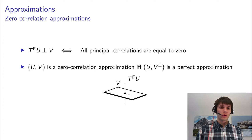We now know that approximations are pairs of subspaces with an approximation map, but in general we need to know what that approximation map is. And the way to do this for most ciphers is using trails, and then we need a corresponding piling up principle. So what are trails in ordinary linear cryptanalysis?